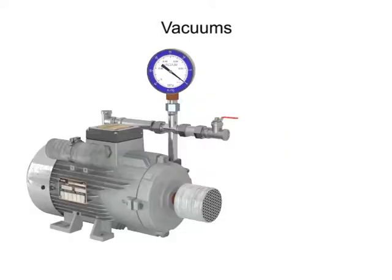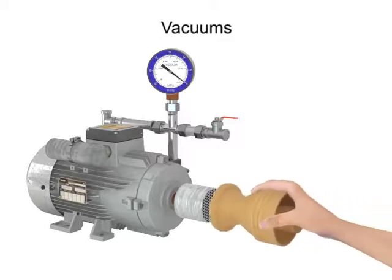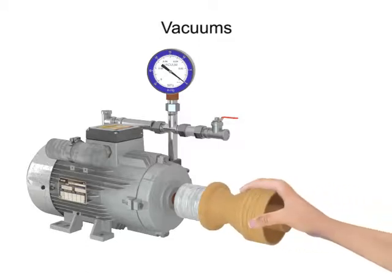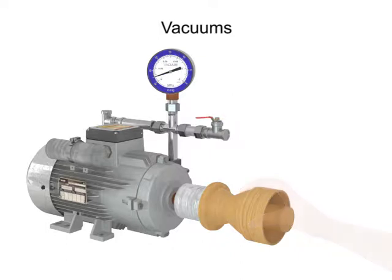Additionally, vacuum chucking is a commonly used method to hold workpieces in place without the risk of damaging their surface. In this application, a piece of wood is held to a lathe so that it can be turned. New applications for the use of vacuum power will continue to grow as technology advances.